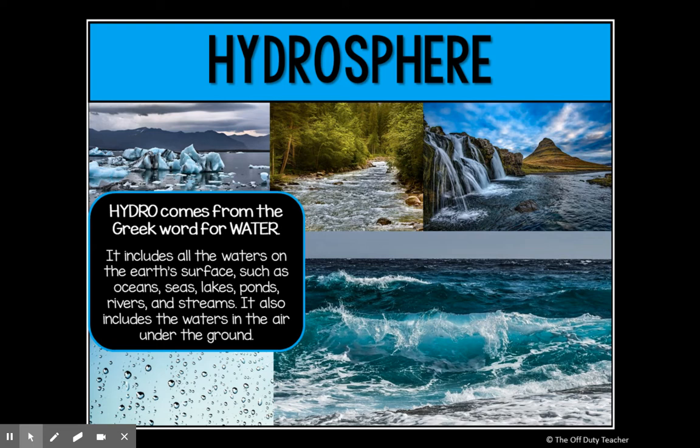The water in the air that falls as rain is part of the hydrosphere. The water up in the sky in the form of clouds going through the water cycle is part of the hydrosphere. Even the water deep underground that we pump up through a well — all water is part of the hydrosphere.